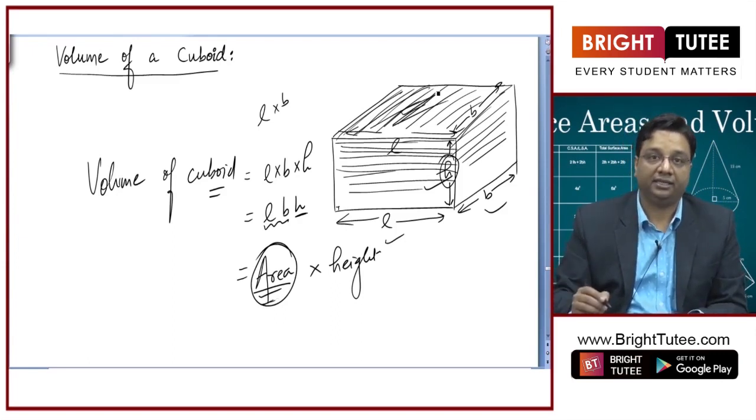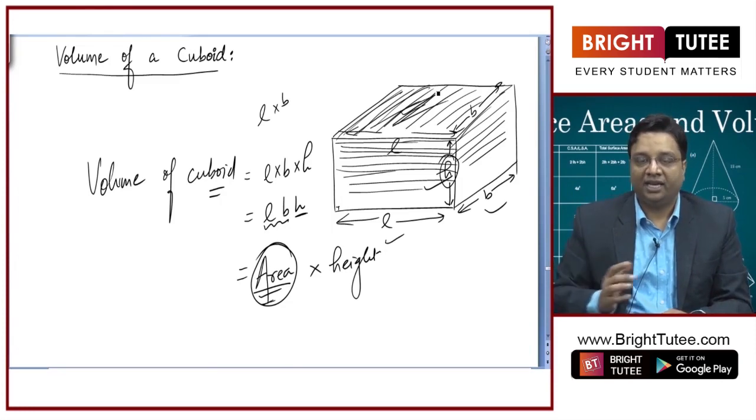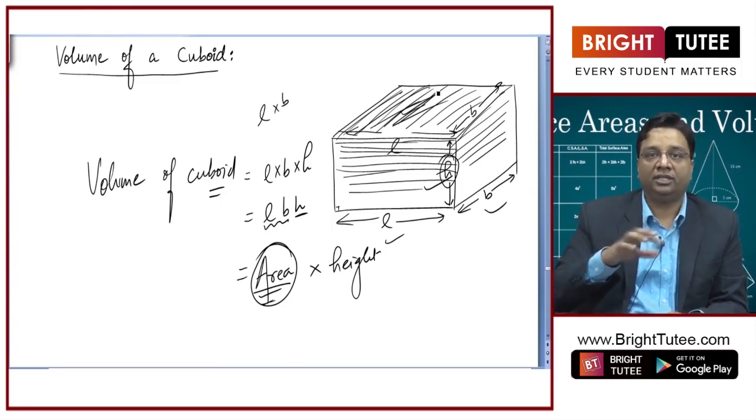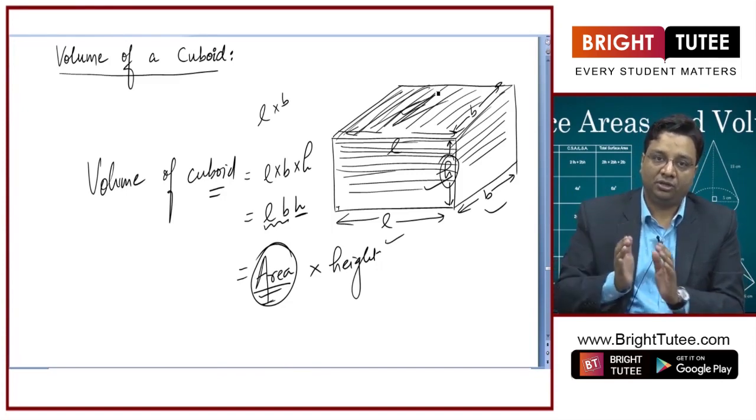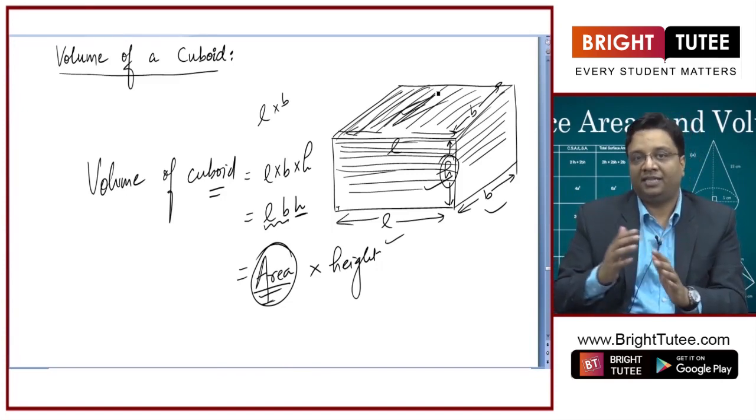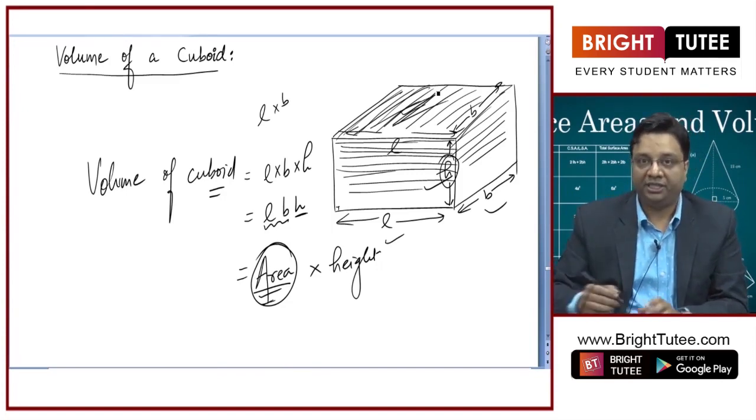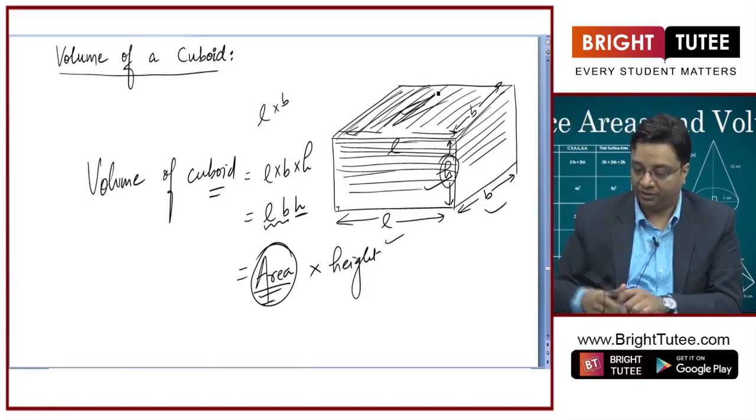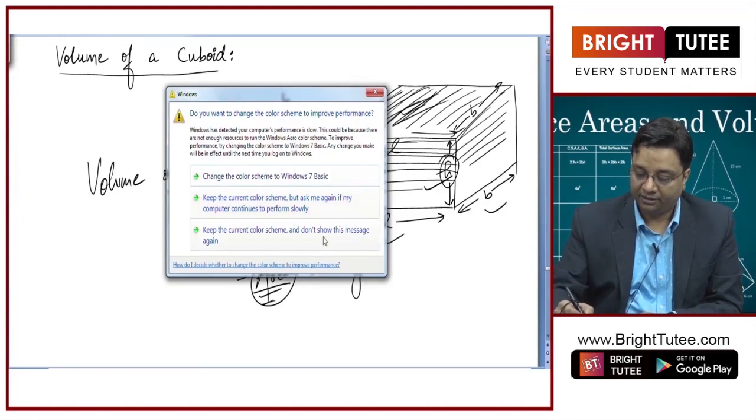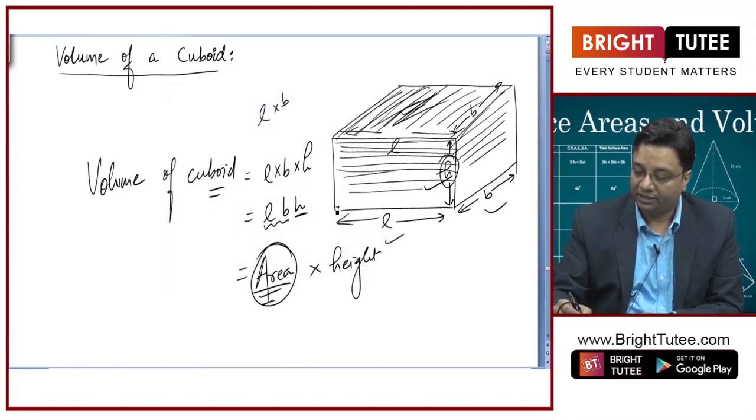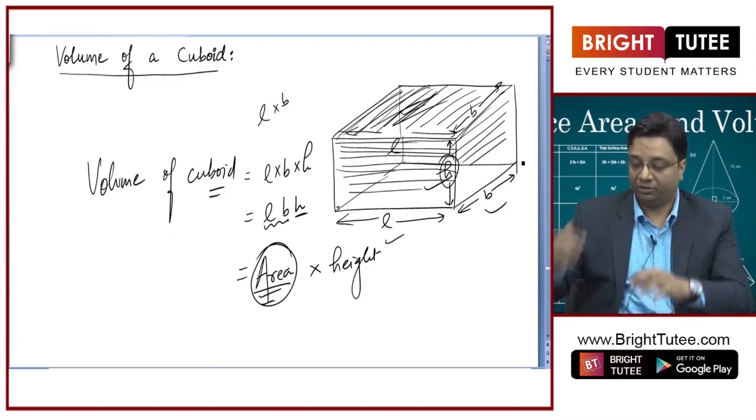So, area of this rectangle into the height and it will be true for all the three-dimensional shapes unless it is not of asymmetric form. If it is symmetric from top to bottom, the way it looks at the bottom, it should look at the top. And it should be symmetric all around.